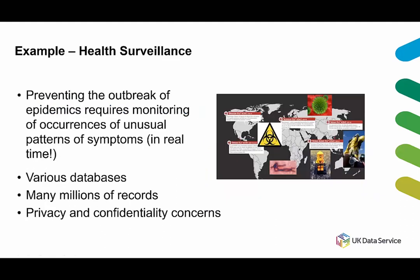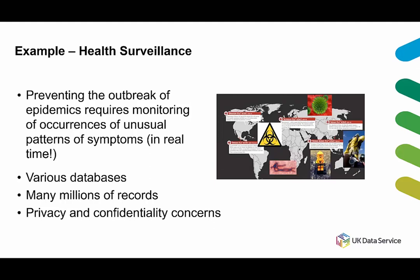The third issue is entity identification. When integrating data, we may need to identify entities from multiple data sources, but the same entity or attribute may have different names in different databases. For example, 'Bill Clinton' and 'William Clinton' actually refer to the same person but may have different representations. A vivid real-world example is health surveillance: preventing epidemic outbreaks requires monitoring unusual patterns of symptoms in real time, drawing data from travel and immigration records, emergency and hospital admissions, drug purchases in pharmacies, and animal health data — which can have different formats, codings, varying data quality, millions of records, and privacy and confidentiality concerns.